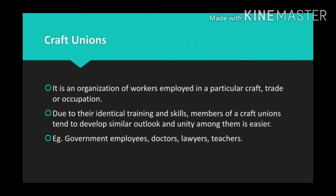To summarize, a craft union is an organization of workers employed in a particular craft, trade, or occupation. Categories include government employees, bank employees, doctors, lawyers, and teachers — all working in a particular craft or trade. Due to their identical training and skill, members develop similar outlook and unity easily. They have strong bargaining power because workers possess specialized skills that cannot be easily replaced during a strike.